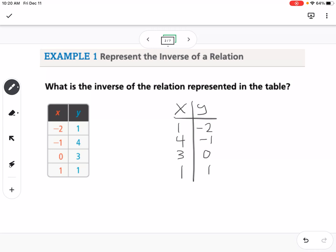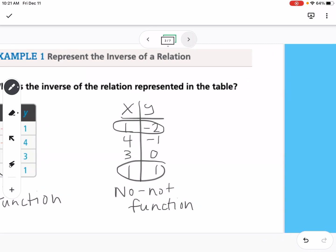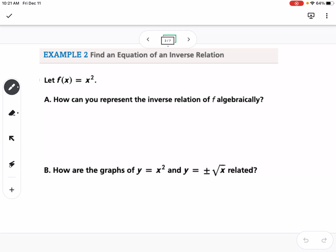So we can do that for any table that we're given. We can do that for any relation that we have, but what we have to understand is, in order for something to be an inverse function, we then have to test to see if it is a function. So how do we find an equation of an inverse relation?